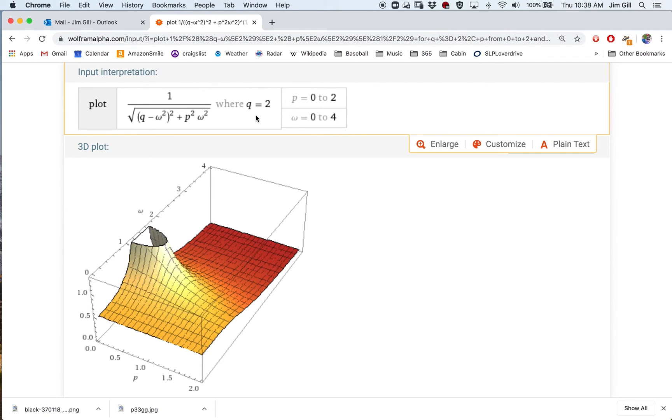I've plotted what we get out of this by letting p, the damping constant, go from zero to two, and omega, the driving force frequency constant, going from zero to four. We see that we're getting this bump here.